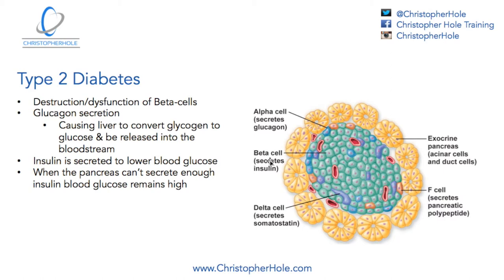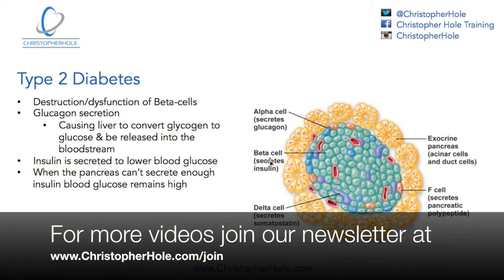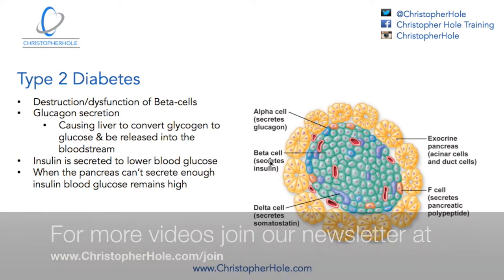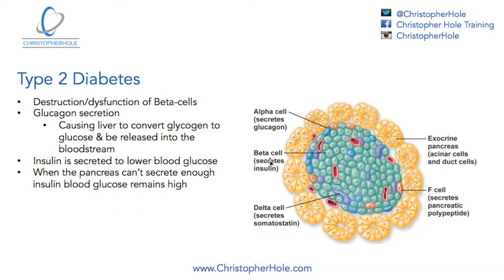Introducing these types of foods into your diet will not only help with type 2 diabetes but it'll also have a knock-on effect on obesity. Hopefully if you've watched both the obesity and diabetes videos you'll be able to see the correlation between the two — how they can affect each other with regards to insulin resistance and the conversion of glucose into glycogen, then triglycerides, and then into adipose tissue.